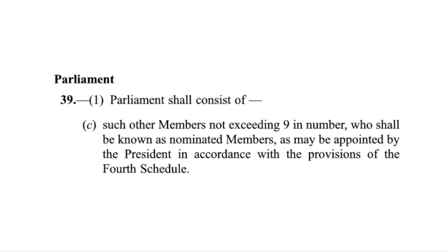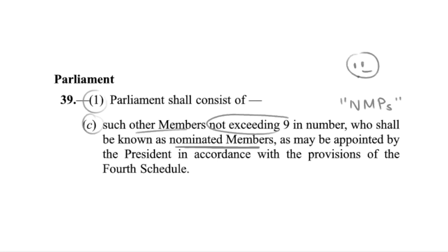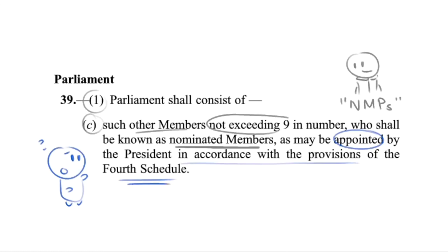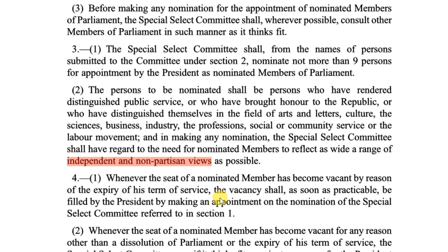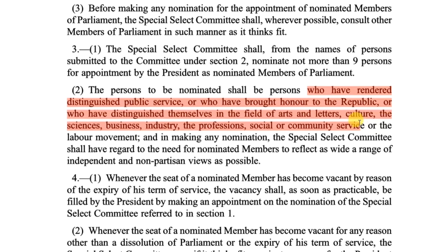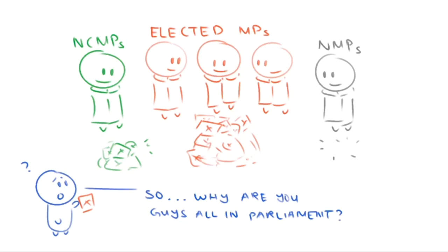Now let's quickly turn to subsection 1C. It states that in addition to the elected members and NCMPs, parliament shall also consist of a maximum of 9 nominated members of parliament, or NMPs. What's important is the mode in which NMPs are nominated. Subsection 1C states that they are chosen through appointment by the President, in accordance with the 4th Schedule. Under Paragraph 3 subparagraph 2 of the 4th Schedule, we see that these NMPs are people with independent and non-partisan views who have distinguished themselves through various different ways. What it all means is that the Parliament of Singapore consists of two groups of non-elected members — the NCMPs and NMPs.